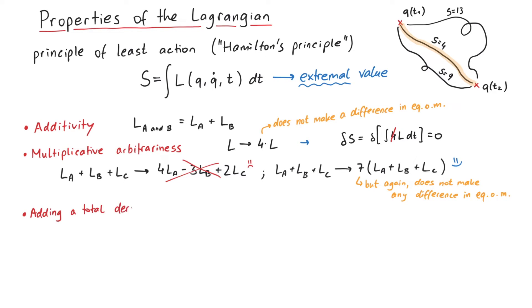Third, adding a total derivative. Let's consider a new Lagrangian, where we add the total time derivative of a function f, which may depend on q and t.